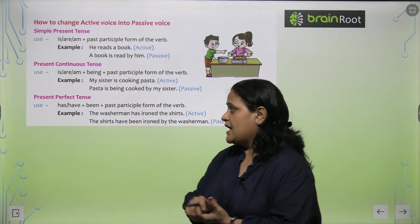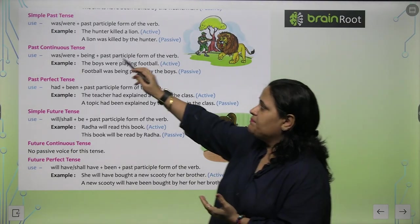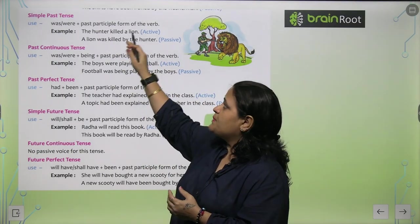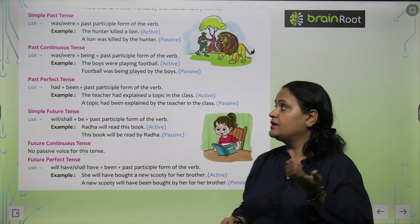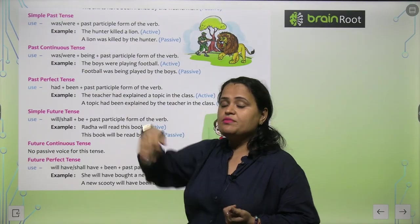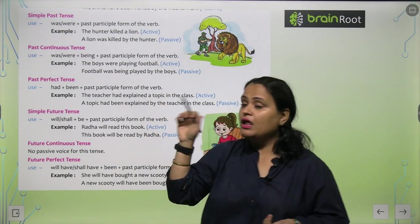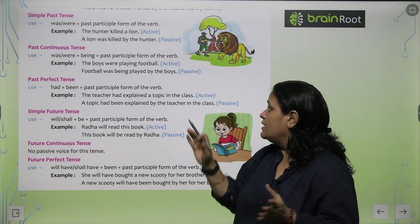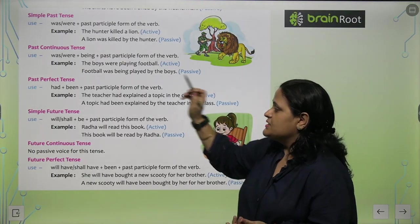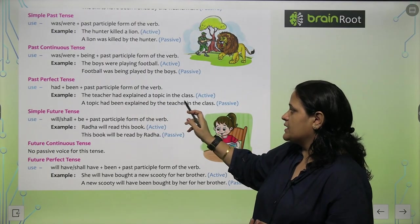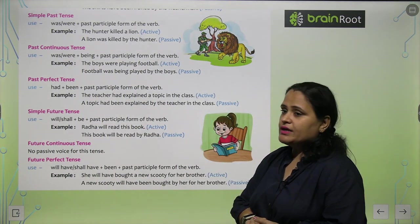Present Perfect: has/have been plus Past Participle form of verb. Simple Past: was/were plus Past Participle — 'The hunter killed a lion' becomes 'A lion was killed by the hunter.' Past Continuous: was/were being plus Past Participle — 'Boys were playing football' becomes 'Football was being played by the boys.' Past Perfect: had been plus Past Participle — 'The teacher had explained a topic in the class' becomes 'A topic had been explained by the teacher in the class.'